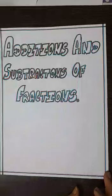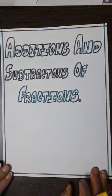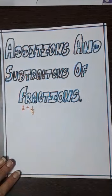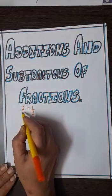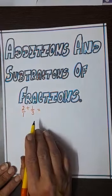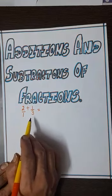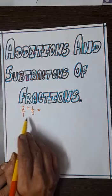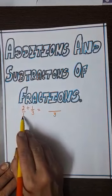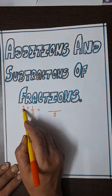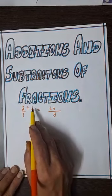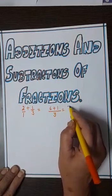Now we come to addition and subtraction of fractions. For example, if we want to add 2 and 1 by 3, we first convert 2 into the form of a fraction by writing it as 2 by 1. Before addition, the denominators must be the same, so we take the LCM of 1 and 3, which is 3. Dividing 3 by 1 gives 3, multiplied by 2 gives 6. Dividing 3 by 3 gives 1, multiplied by 1 gives 1. So we get 7 by 3.